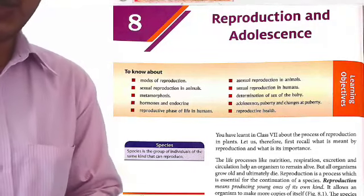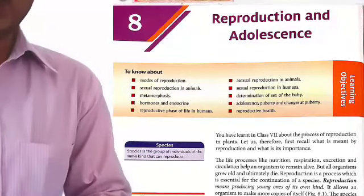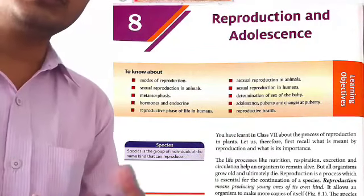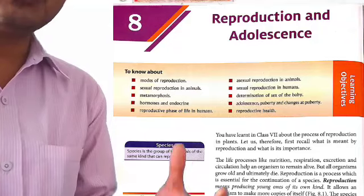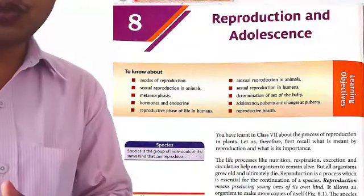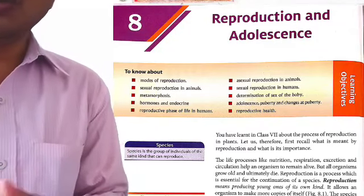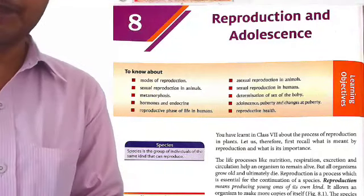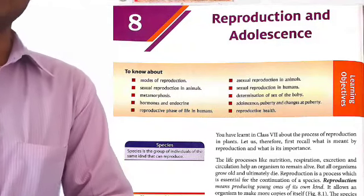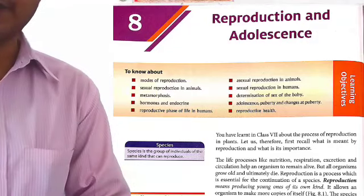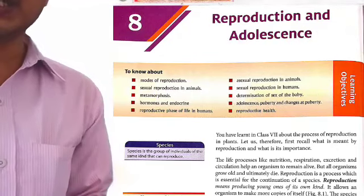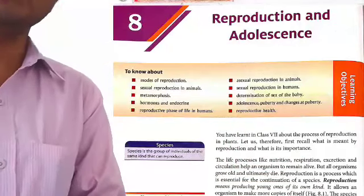Animals and people make the same kind of offspring — they can reproduce, so they are species. In the seventh class, we studied the process of reproduction and different plants. In the eighth class, we will go deeper and study the reproduction of animals.